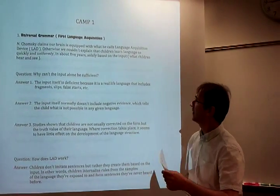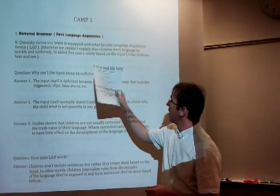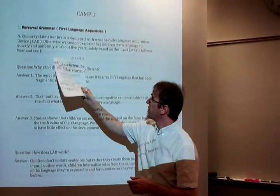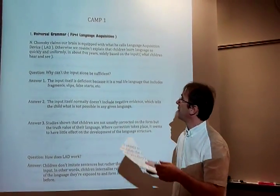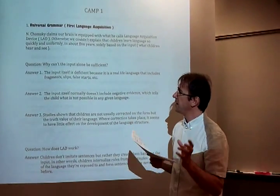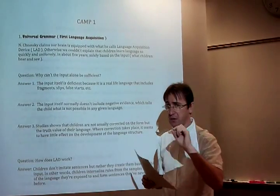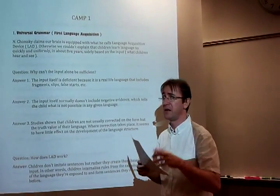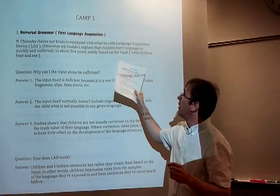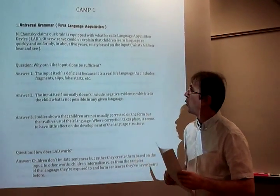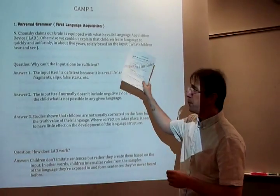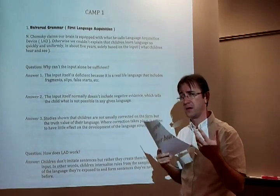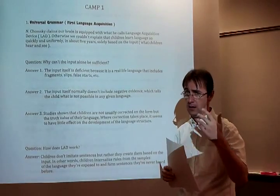The main name behind the language acquisition device is Noam Chomsky. He claimed that our brain is equipped with some device that enables children to learn languages so quickly and uniformly in about five years of their lives, and solely based on the input. What he's saying is that the input alone is not enough — we need LAD plus the input to make sense of what's coming and to develop our language.